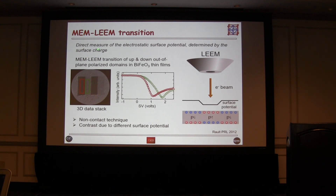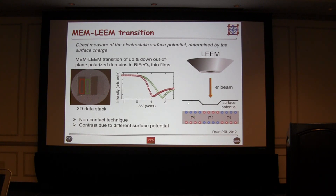What we can do with LEEM is shown in this example — a completely different system: a thin film with ferroelectric domains written into a ferrite thin film. Electrons come in, and the domains written up and down modulate the surface potential, so you can see from this cartoon that electrons would be reflected at different energies. This is indeed what we see. You can see that there is a fraction-of-a-volt difference in the surface potential, which directly reflects the surface charge. So we have a non-contact imaging technique which we can relate directly to surface potential.